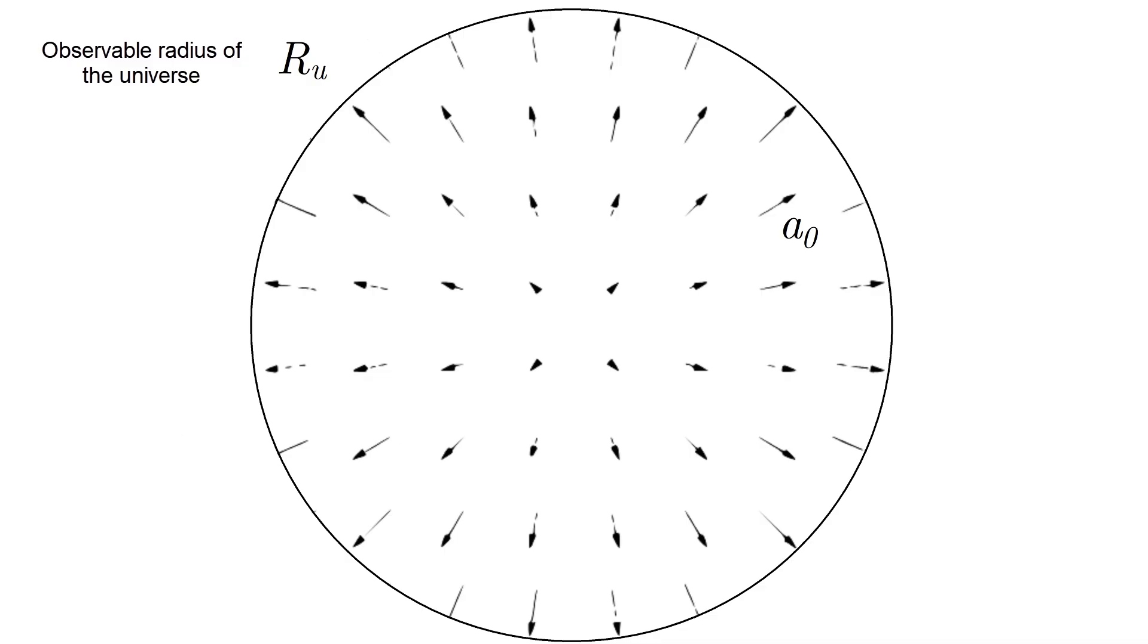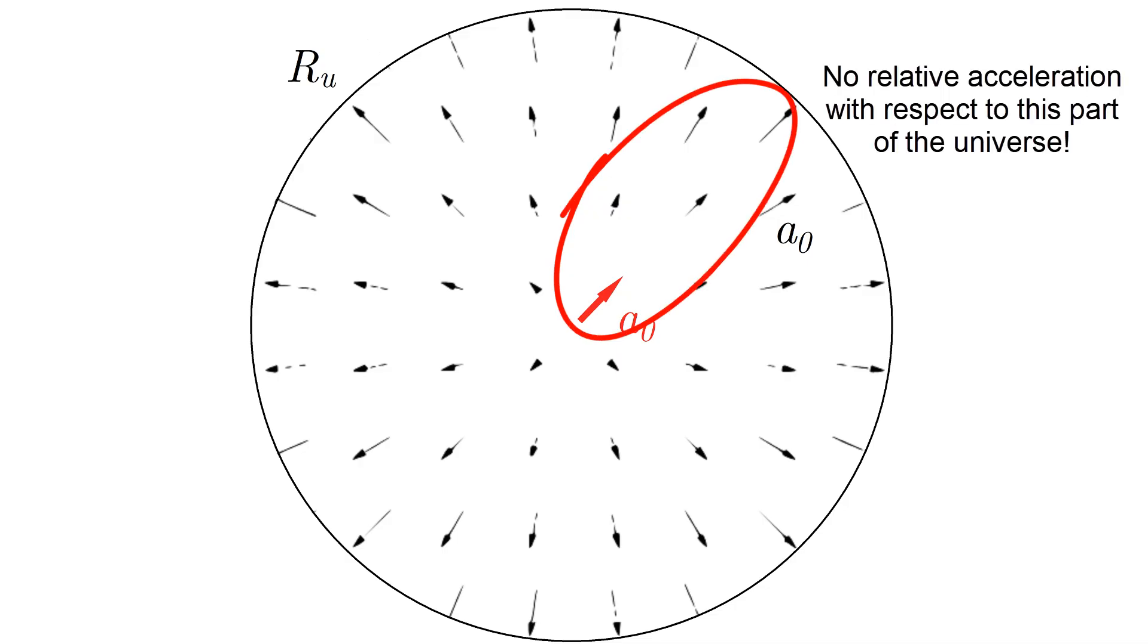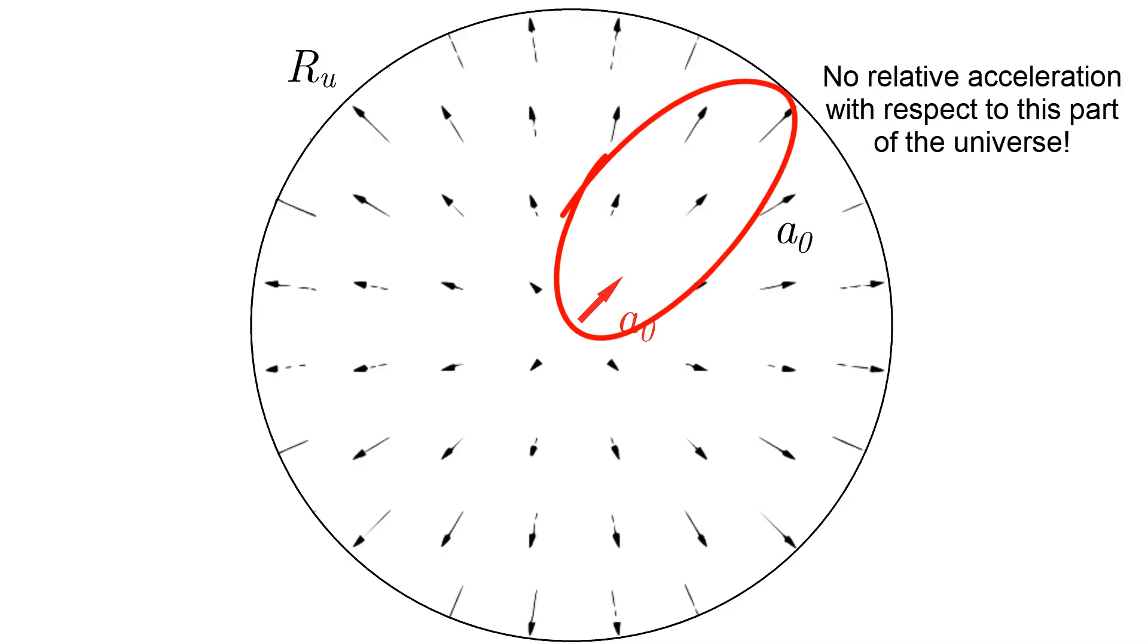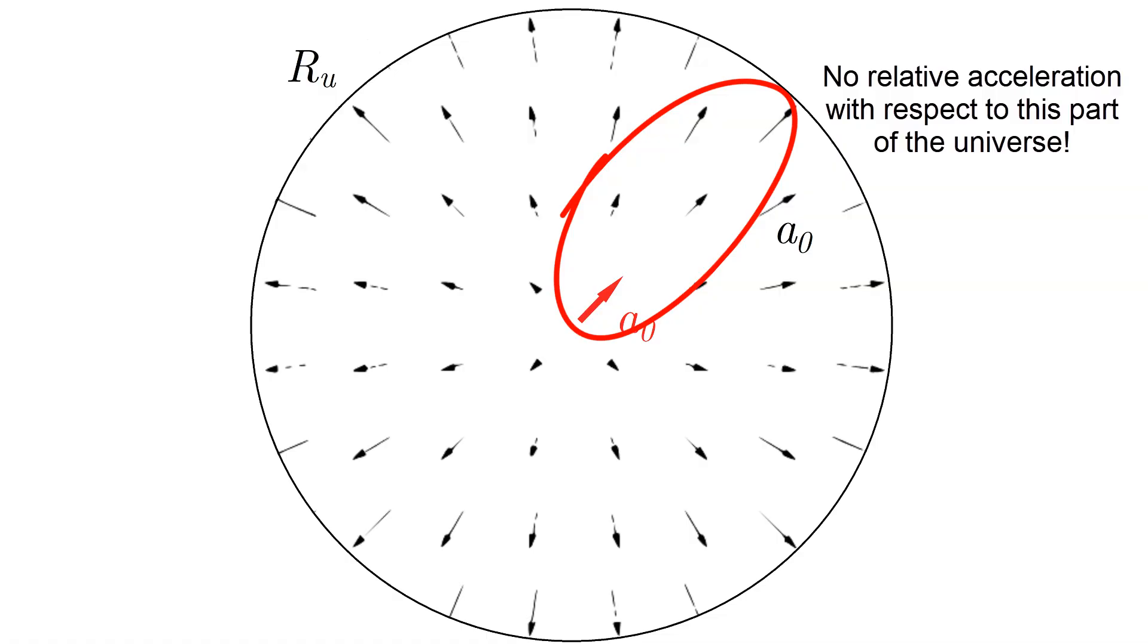If one considers an expanding universe, most of the matter in the observable universe is accelerating away from a stationary body, at approximately 10 to the power of minus 10 meters divided by second squared. But if the body happens to have an acceleration of this magnitude, it won't be accelerating with respect to some part of the universe, and following Mach, its inertia should be decreased. Could this be the origin of MOND?